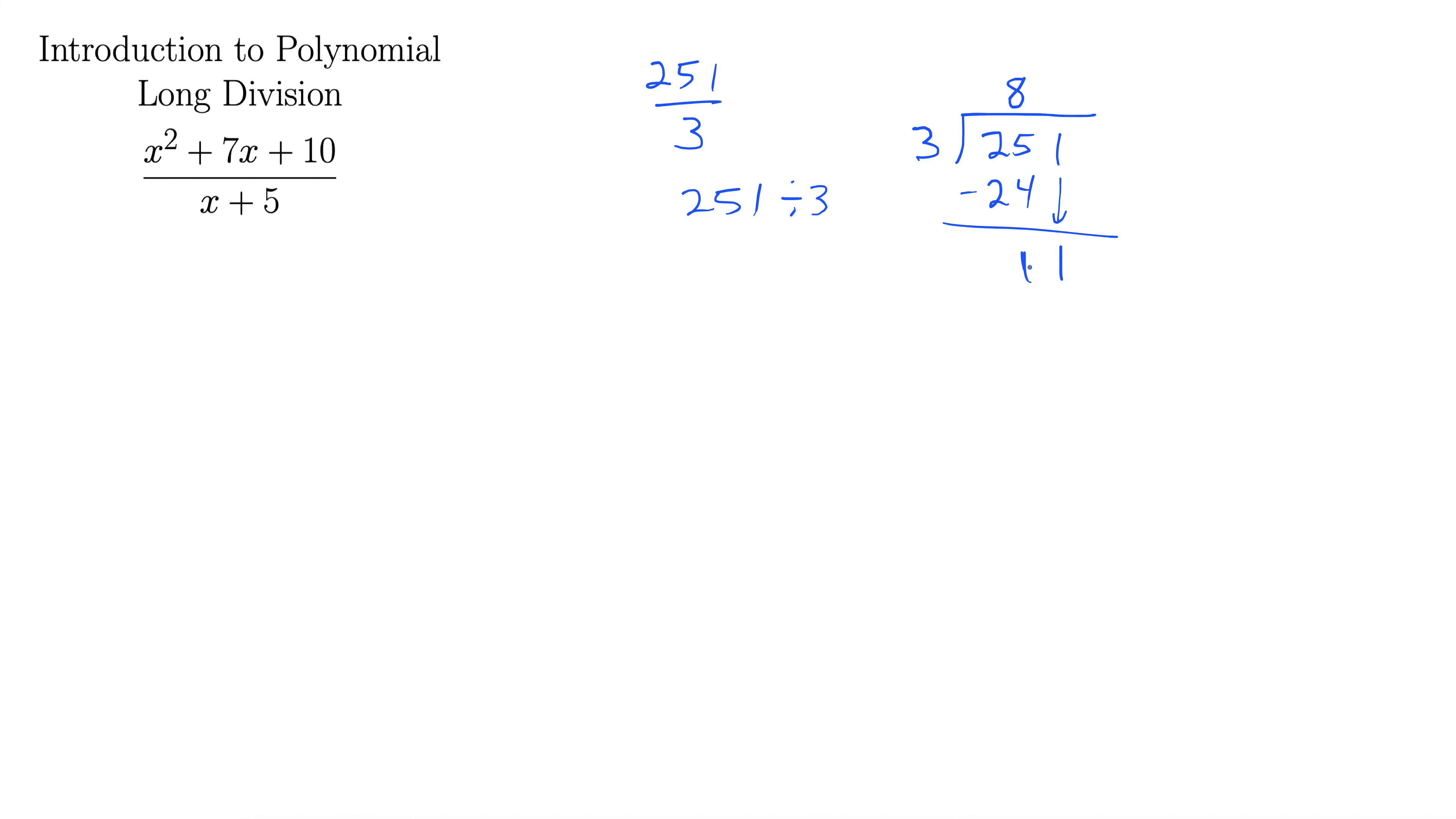Remember this? Long division, numbers. And we'd say, how many times does 3 go into 11 without going over? Well, it goes in 3 times. 3 times 3 is 9. Subtract that off, and we get 2. And then this bit down here would be the remainder. Okay, so that's how we divided numbers.